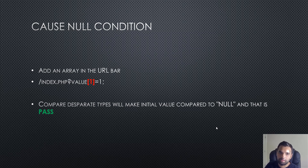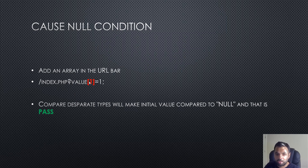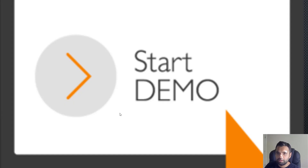Your main goal when pen testing is to make the application return a null value, so your condition succeeds. One technique is to add an array in the URL. For example, if you have value=1 in the URL and you inject an array there — even though the variable isn't meant to be an array — PHP will compare disparate types, convert it to null, and that null will pass the condition.